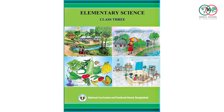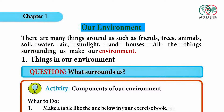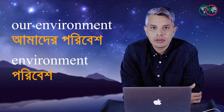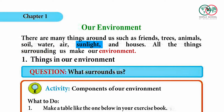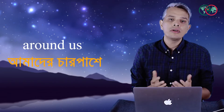Class 3 Science, Chapter 1, Page 2: Our Environment. There are many things around us such as friends, trees, animals, soil, water, air, sunlight, and houses.